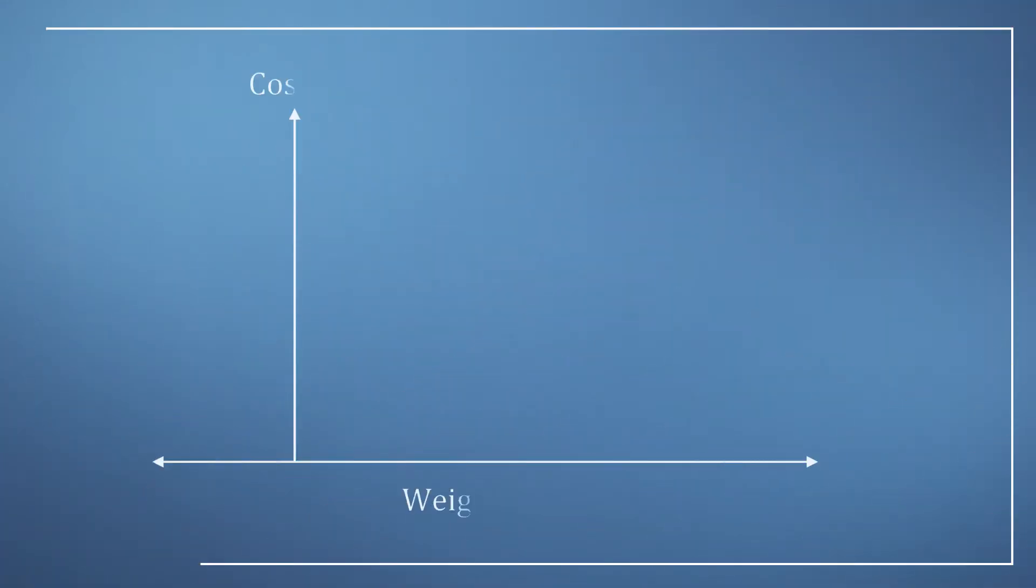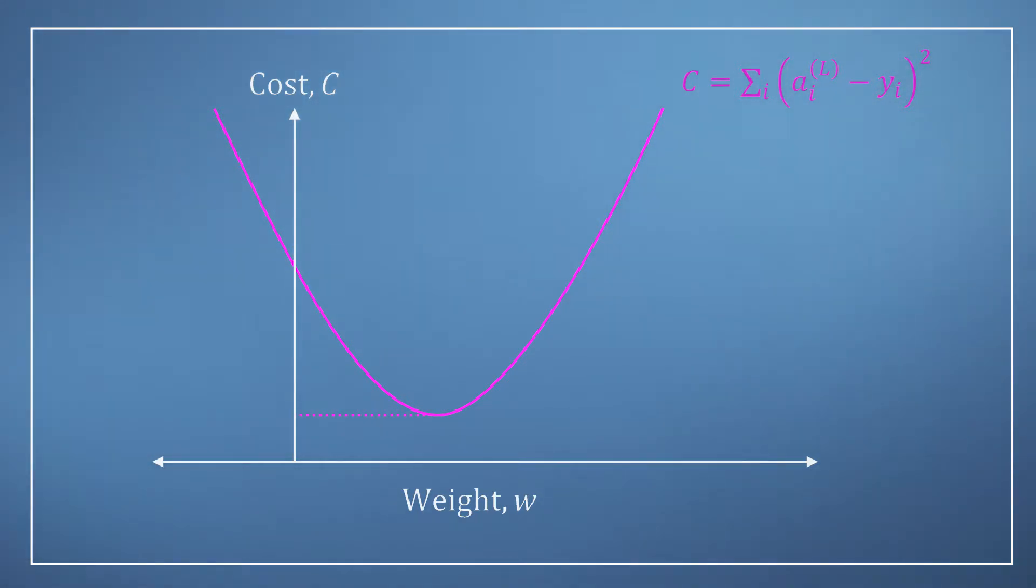If we were to focus on the relationship between one specific weight and the resulting cost function it might look something like this where if it's either too large or too small the cost is high but at one specific value the cost is at a minimum.